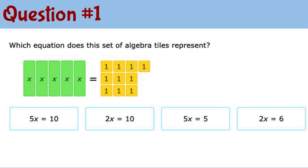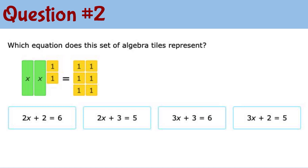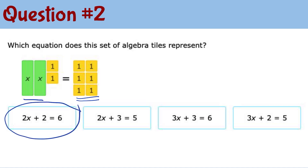Question number 1: there are 5 x-tiles on the left side and 10 unit tiles on the right side. Question number 2: in this diagram, on the left side we have 2x tiles and 2 unit tiles, so the left side is 2x plus 2 and the right side has 6 unit tiles in total. So the answer is 2x plus 2 equals 6 as the representation of these algebra tiles.